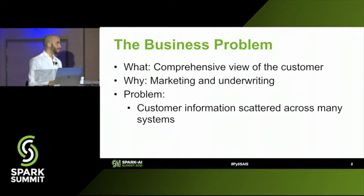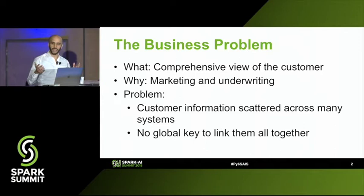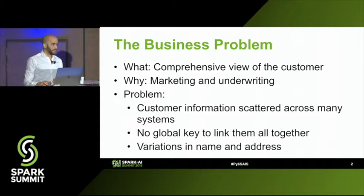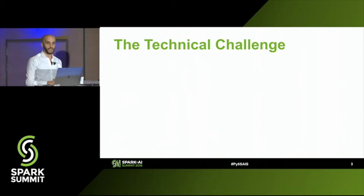So what's the problem? The problem is that the information MassMutual already has in-house about its current and potential customers is scattered across a variety of systems owned or developed by various teams at various periods of time. There is no global key linking them all together — there's no way to say, here's Eddie's information in this system and here's Eddie's information in these 10 other systems. And we can't just do a naive equality join because there are always variations in how a person's information is recorded, particularly in the name and address.